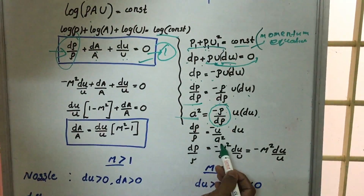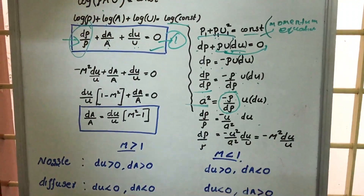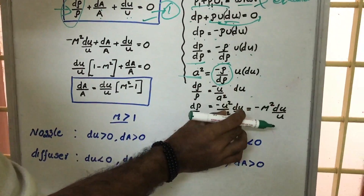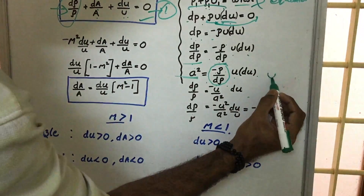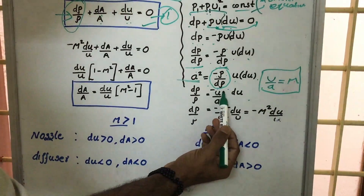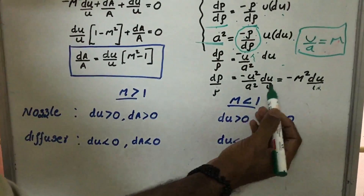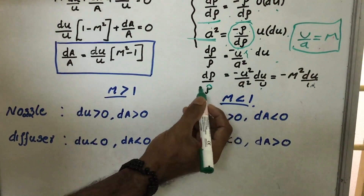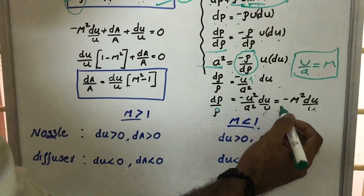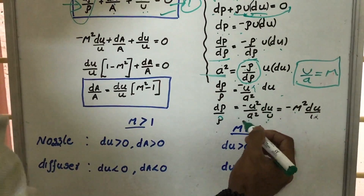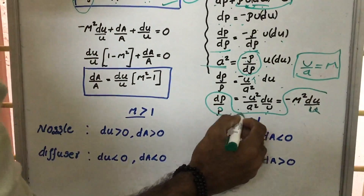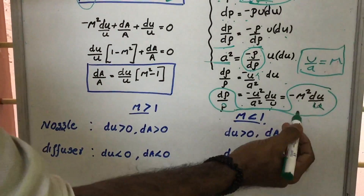Rearranging, dρ/ρ equals minus (u/a²)·du. We know that the ratio of velocity to acoustic velocity is the Mach number, so u/a equals M. Multiplying numerator and denominator by u gives u²/a² equals M². Therefore, dρ/ρ equals minus M²·(du/u).